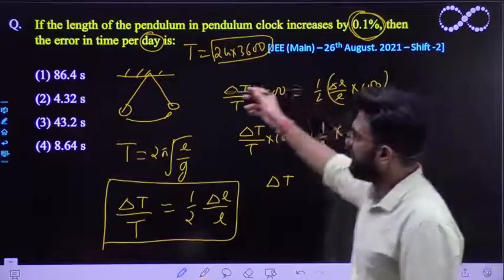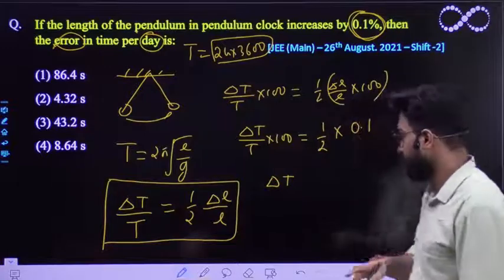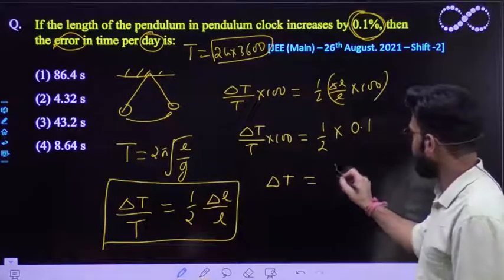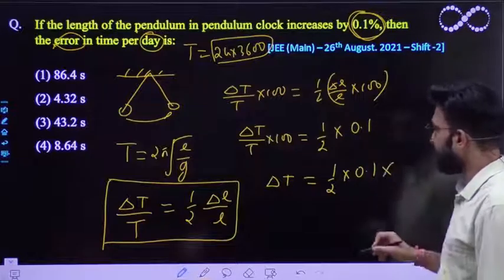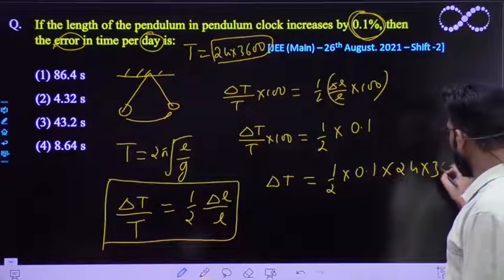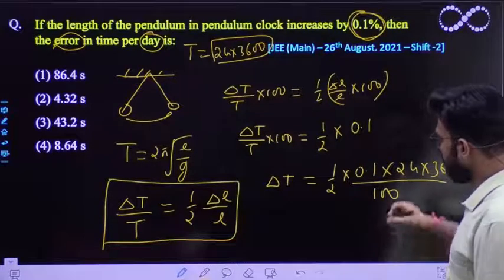Because we need the error in the time. So what is the error? Delta T is error in the time, measurement of the time. So it would be equal to half 0.1 multiplied by time. Time is how much? 24 into 3600 divided by 100. This is the expression that you are getting.